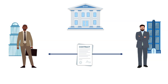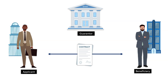So, the one who needs to arrange this assurance is called the applicant. The third party who actually provides this assurance or guarantee is called the guarantor, which is usually a bank. And the one who wants to enjoy this assurance or guarantee is called the beneficiary.